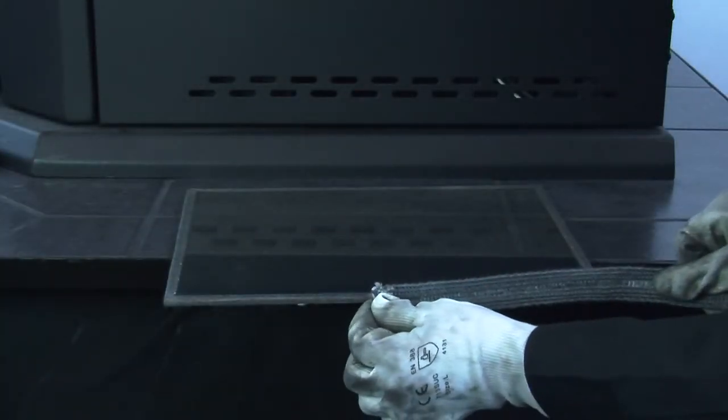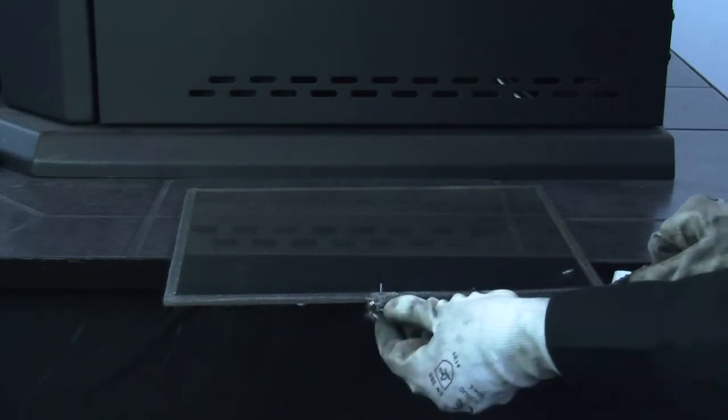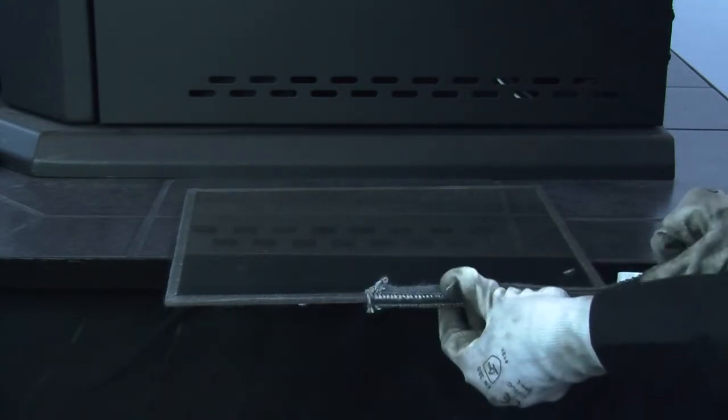To add the new gasket to your glass, simply adhere the gasket to the bottom center of the glass and wrap the excess around the edges.